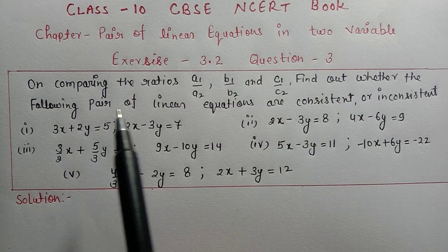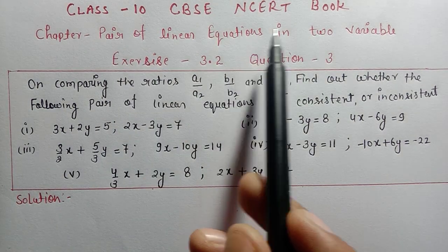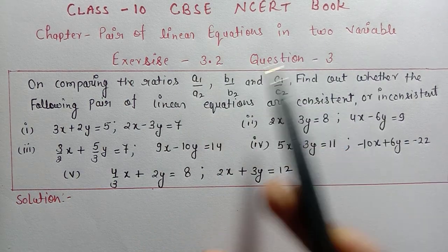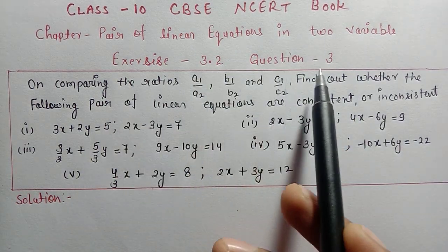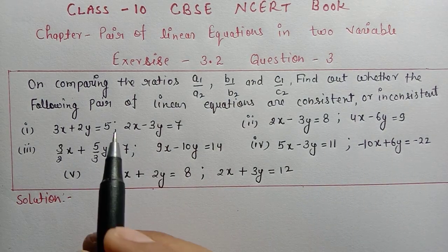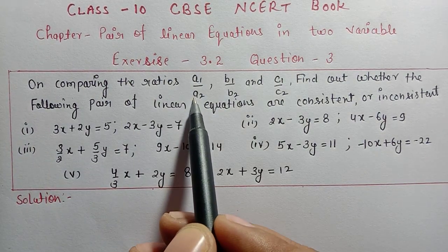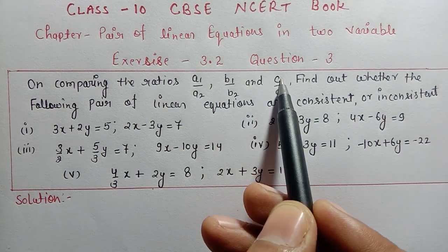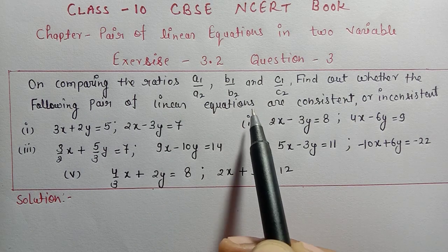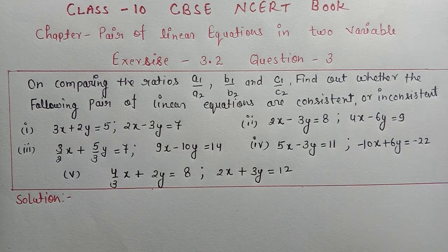Hello students, welcome to my channel. I'm your maths teacher. Today I am solving Class 10th CBSE NCERT book Chapter: Pair of Linear Equations in Two Variables, Exercise 3.2, Question number 3. We will solve all its parts in this video by comparing the ratios a1/a2, b1/b2, and c1/c2.